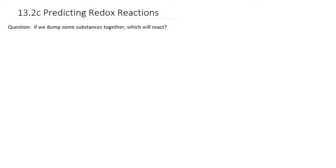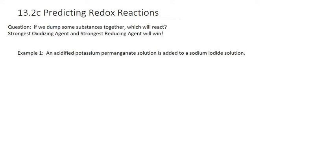We've now come to the point where we want to be able to predict redox reactions — to answer the question: if we dump some substances together, which ones will react? Among all the substances, we might have some oxidizing agents and some reducing agents. The short answer is that the strongest oxidizing agent and the strongest reducing agent will win; all the rest will just sit there as spectators.